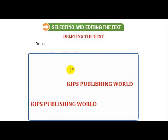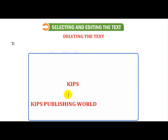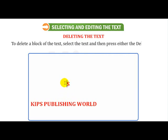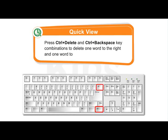You can also delete text by using the Backspace key. It removes the character to the left of the cursor position. To delete a block of text, select the text and then press either the Delete key or the Backspace key. Note that pressing Ctrl+Delete and Ctrl+Backspace key combinations deletes one word to the right and one word to the left respectively.